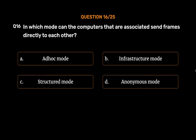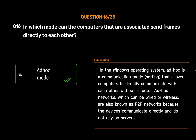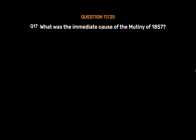The correct answer is Option A: Ad hoc mode. In the Windows operating system, ad hoc is a communication mode setting that allows computers to directly communicate with each other without a router. Ad hoc networks, which can be wired or wireless, are also known as peer-to-peer networks because the devices communicate directly and do not rely on servers.